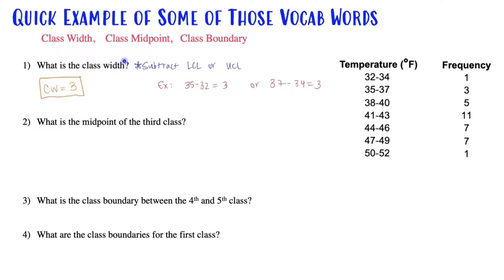And by the way, I abbreviate class width as CW, so feel free to do the same as well. So class width is equal to 3.